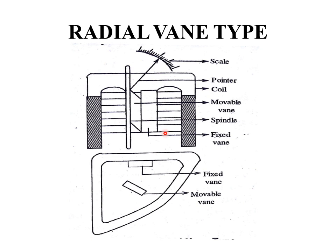This is the construction of a radial vane repulsion type moving iron instrument. It consists of a coil and two vanes: one movable vane and one fixed vane. The fixed vane is attached to the coil, whereas the movable vane is mounted on the spindle. The spindle carries the pointer which moves on the graduated scale. If the vanes are radial, it is called a radial vane repulsion type instrument.